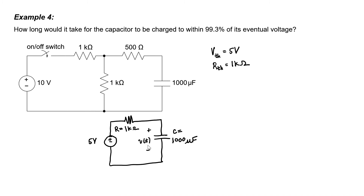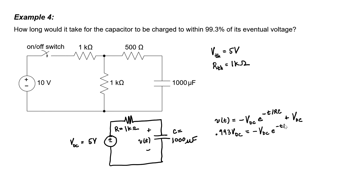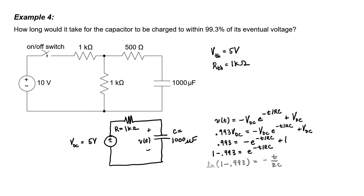Let's call the voltage across the capacitor V. 5 volts is our DC voltage. We want the voltage across the capacitor to reach 99.3% of the 5 volt source. The DC voltage cancels out of the equation, and it turns out the capacitor needs 5 RC time constants to reach that voltage. Plugging in R equals 1 kilohm and C equals 1000 microfarads, we're left with a time of 5 seconds. It takes this capacitor 5 seconds to charge.